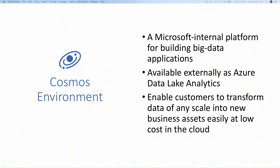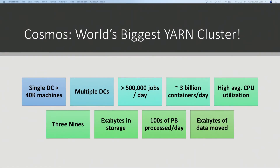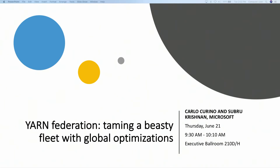Cosmos also happens to be the largest YARN cluster in the world. The largest YARN cluster we have today has more than 40,000 machines, and we have many such clusters spanning different data centers. We run more than half a million jobs a day and are requesting more than three billion containers from YARN. We offer our customers three nines of availability. Exabytes of data are stored in Cosmos and petabytes of data are processed daily.